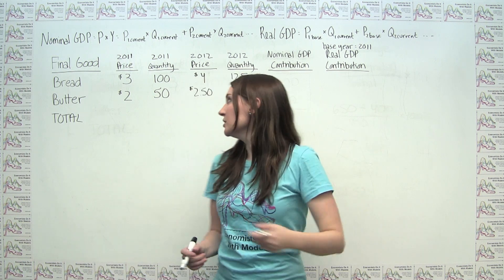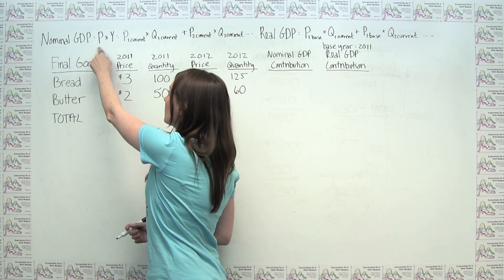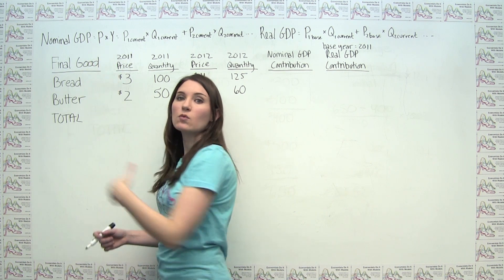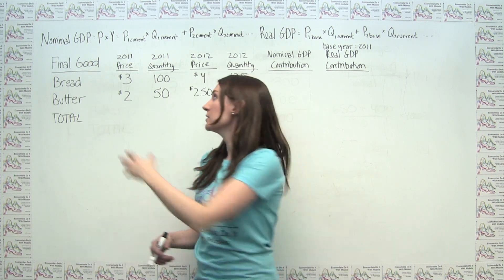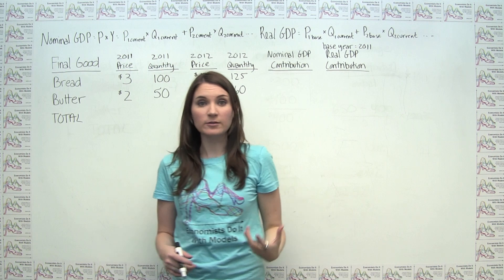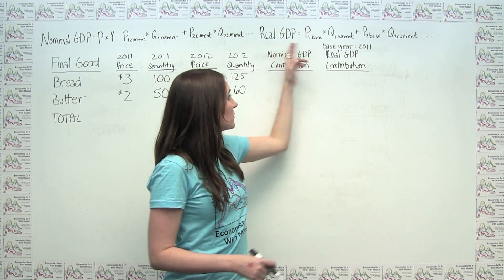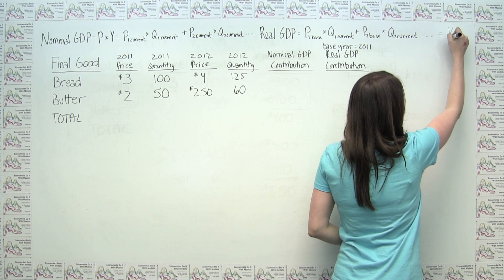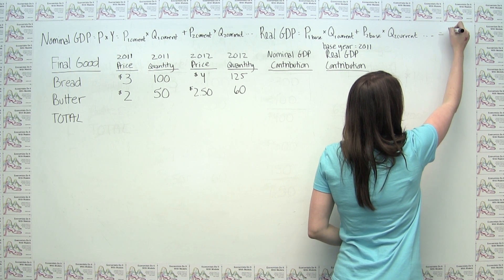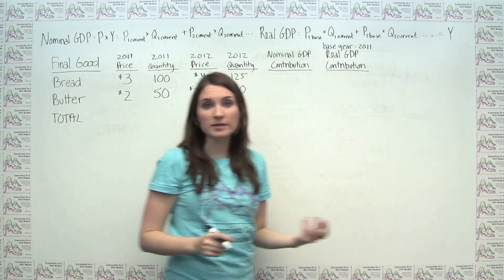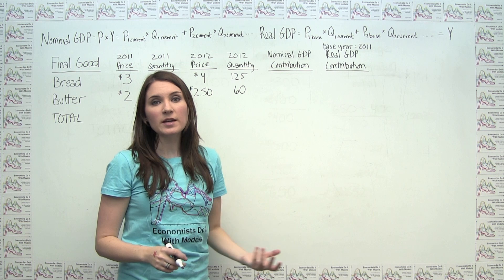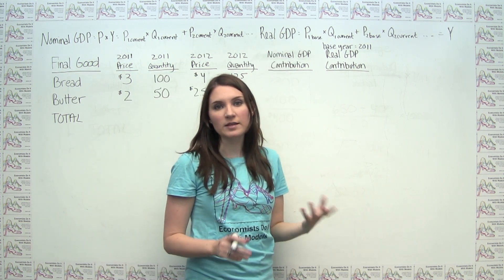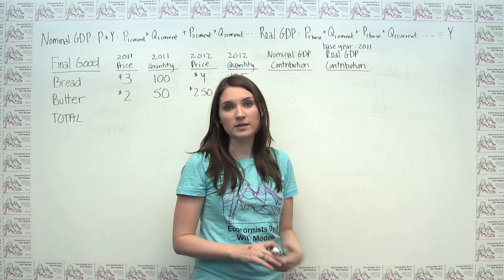From a notation standpoint, we usually see nominal GDP written as P times Y, where P is some measure of aggregate price level. Real GDP is what we think about when we see just Y by itself. The concept of real GDP versus nominal GDP is most easily explained via an example.